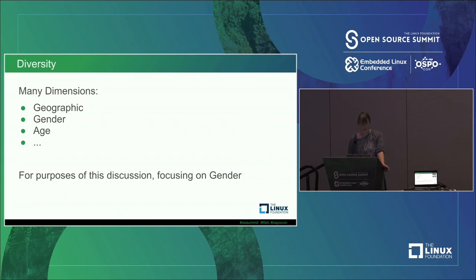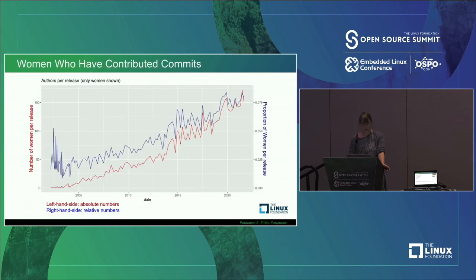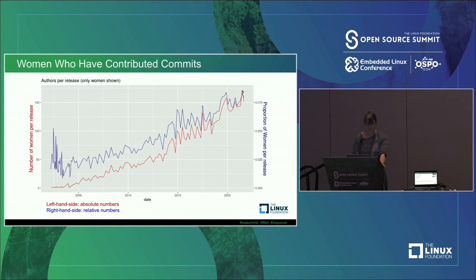There are many dimensions of diversity — geographic, gender, age. The easiest for us to analyze has been gender. Looking at the proportion of women per each release: at the starting point there's a lot of variability because the numbers are very small, but as we go along we're getting between 7.5% to 10% each release. In absolute numbers we're seeing about 150 women contributing to each release, which for most projects is actually a good number.